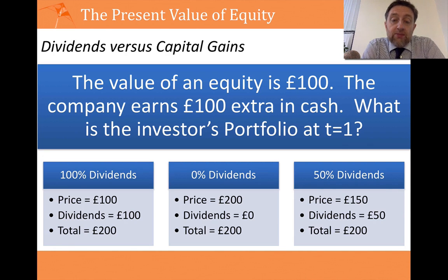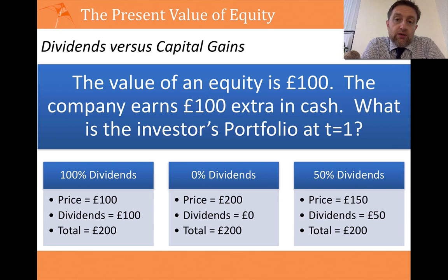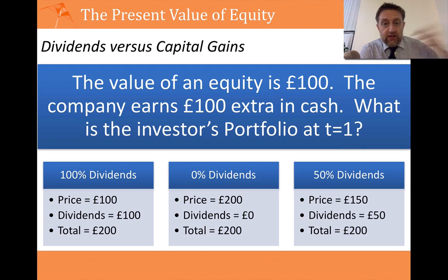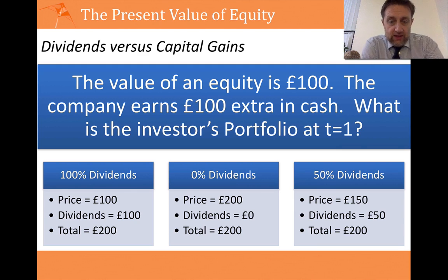Both of those are income received by shareholders. Dividends are paid by the company regularly, whether that's every quarter, every six months, or every year. Capital gains are what you get when you sell your equity. So there are two types of income: what you receive regularly from a company — we call that dividends — and what you get when you sell your shares.